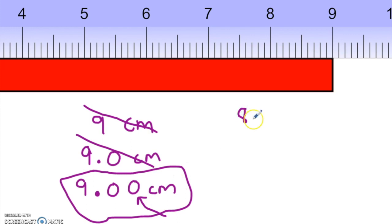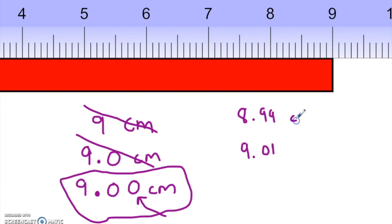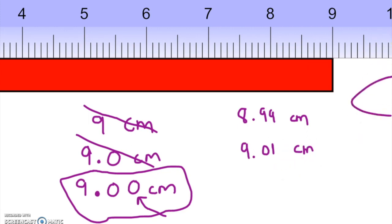Taking this further, you could guess that the measurement is 8.99 centimeters or 9.01 centimeters. Significant figures give scientists a way to express some uncertainty in their measurements, and uncertainty in science always arises from the instrument itself — scientists are always limited by their measuring instruments.